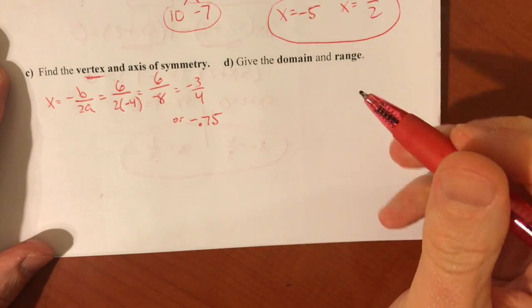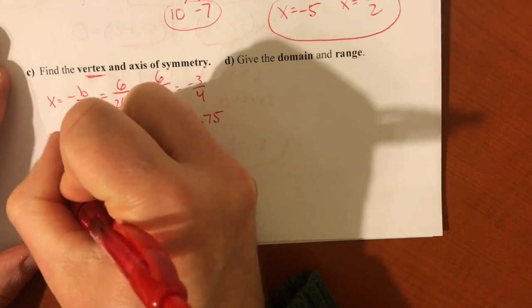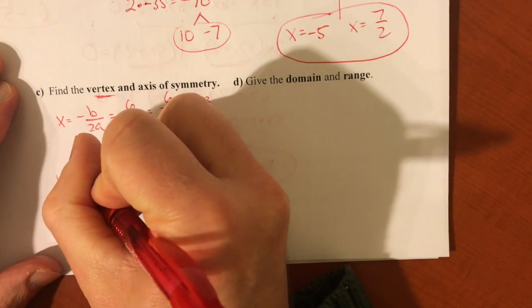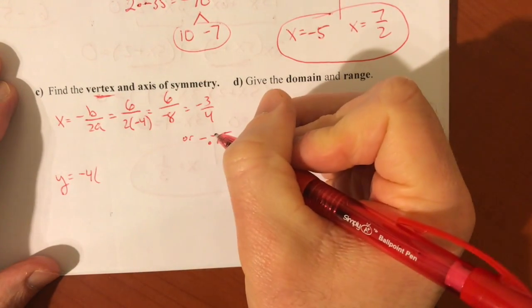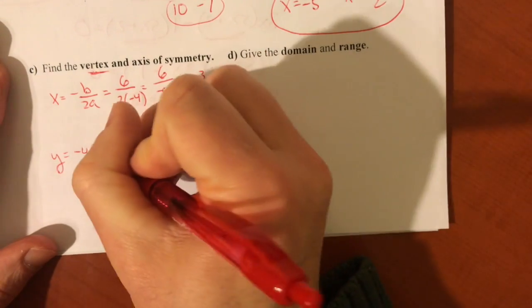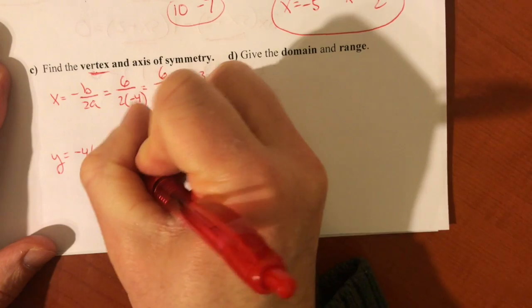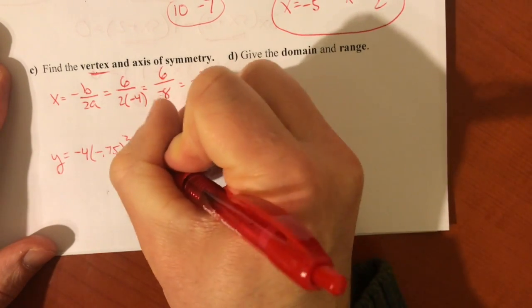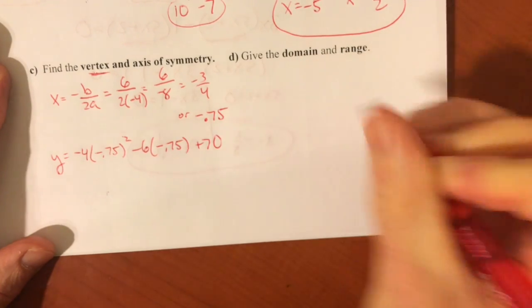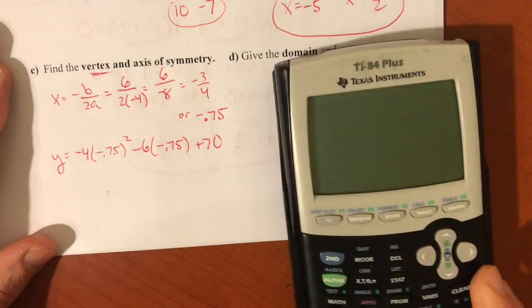And to find the y-coordinate, because the vertex is a point, I want the y-coordinate, remember we're just going to plug this value into the original function. Just plug it in. It's like just making a table. If you want to know what y is when x is negative 0.75, I'll plug it in. Plug it in, plug it in. Yeah, it's been a while since you've had to hear that.